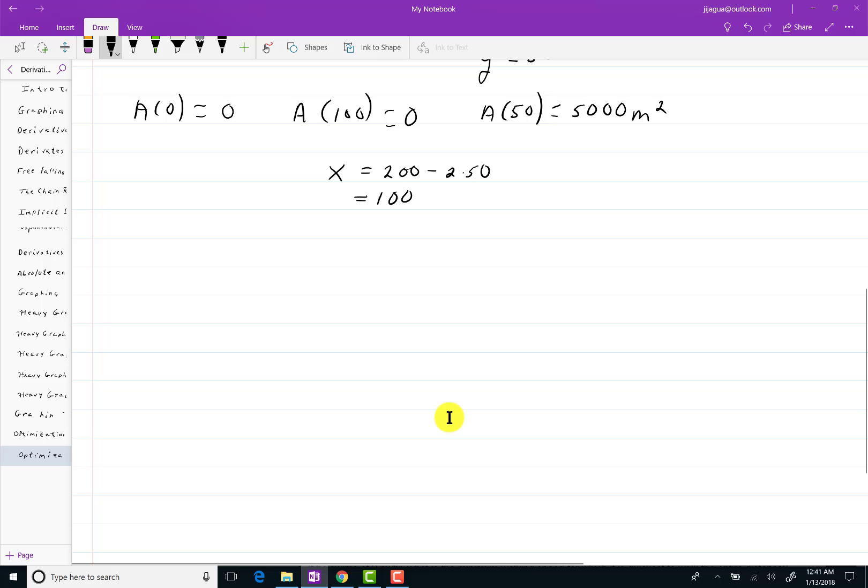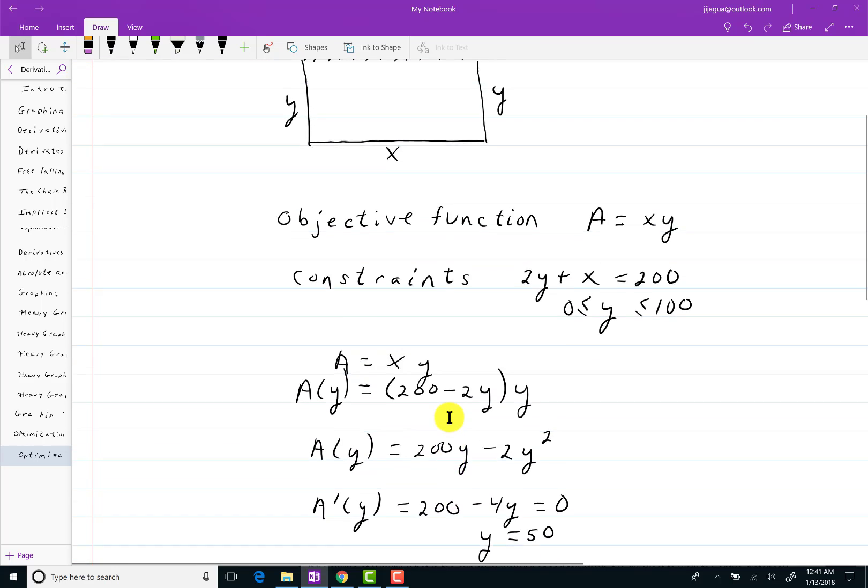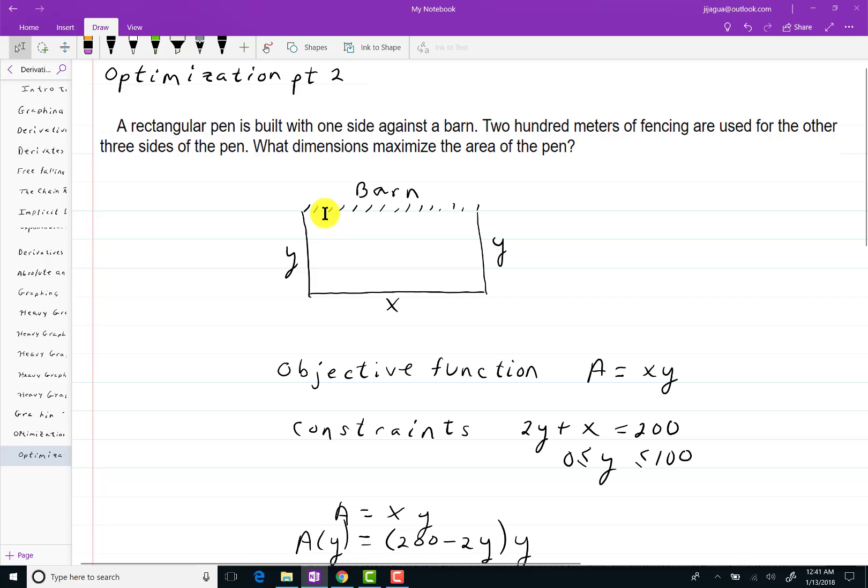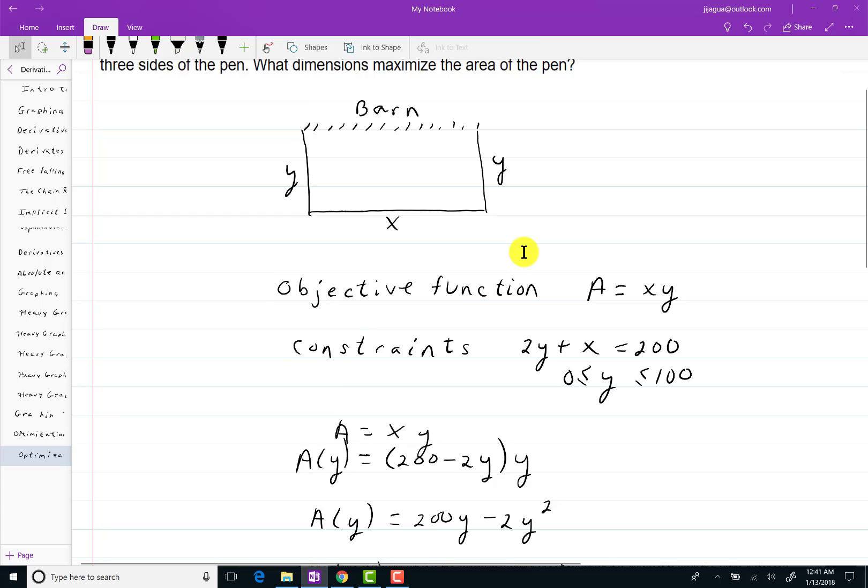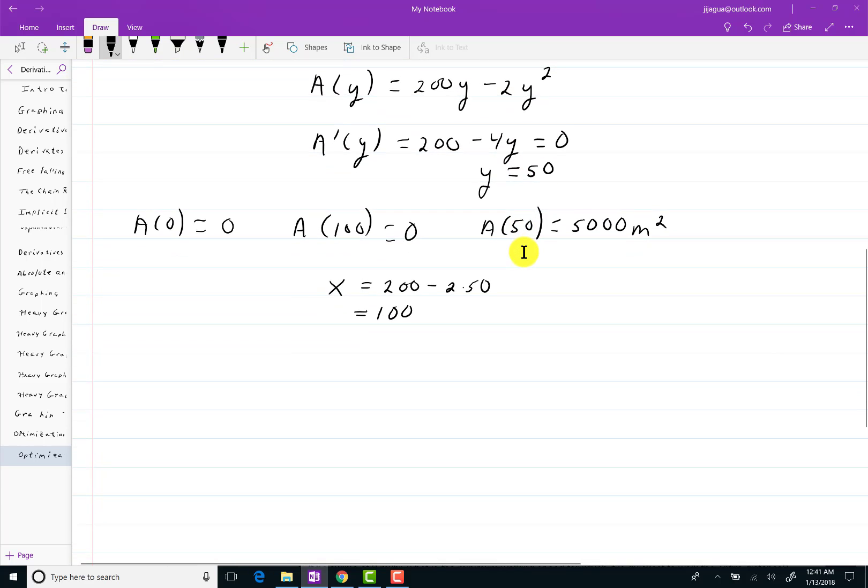So to answer the question, it's not a bad idea to go back to the problem itself. It says, what dimensions maximize the area? That means I want the value of x and I want the value of y. You usually list your dimensions in terms of base times height or length times width. Whatever you want to call these things doesn't matter to me. So the x that I found was 100 meters and the y was 50 meters. So the answer to the question is 100 meters by 50 meters.